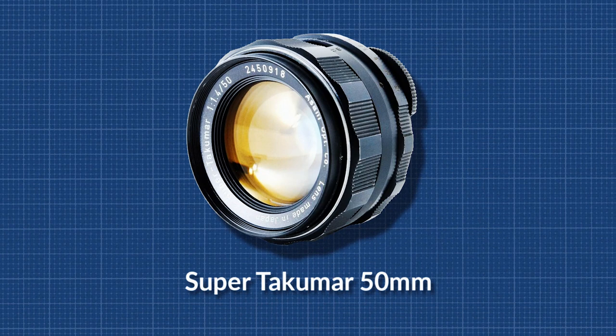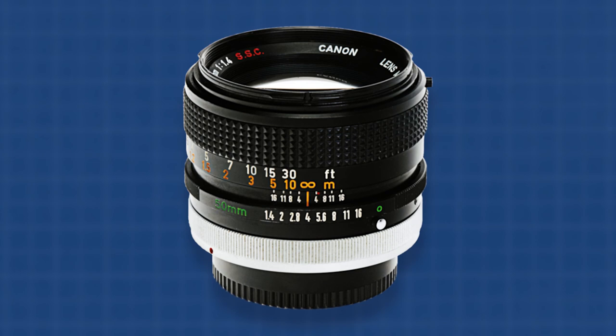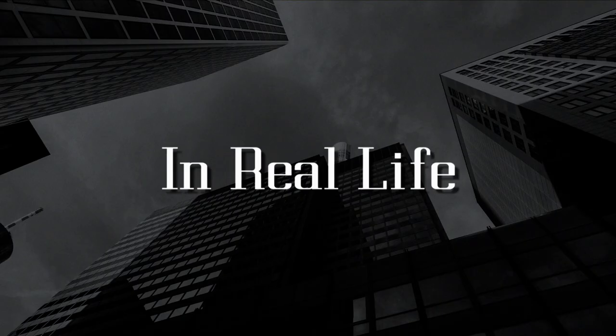Yet another problem is focus breathing. This may become annoying when you want to include rack focus. If a lens has heavy focus breathing, it also zooms in or out a little when you pull focus.